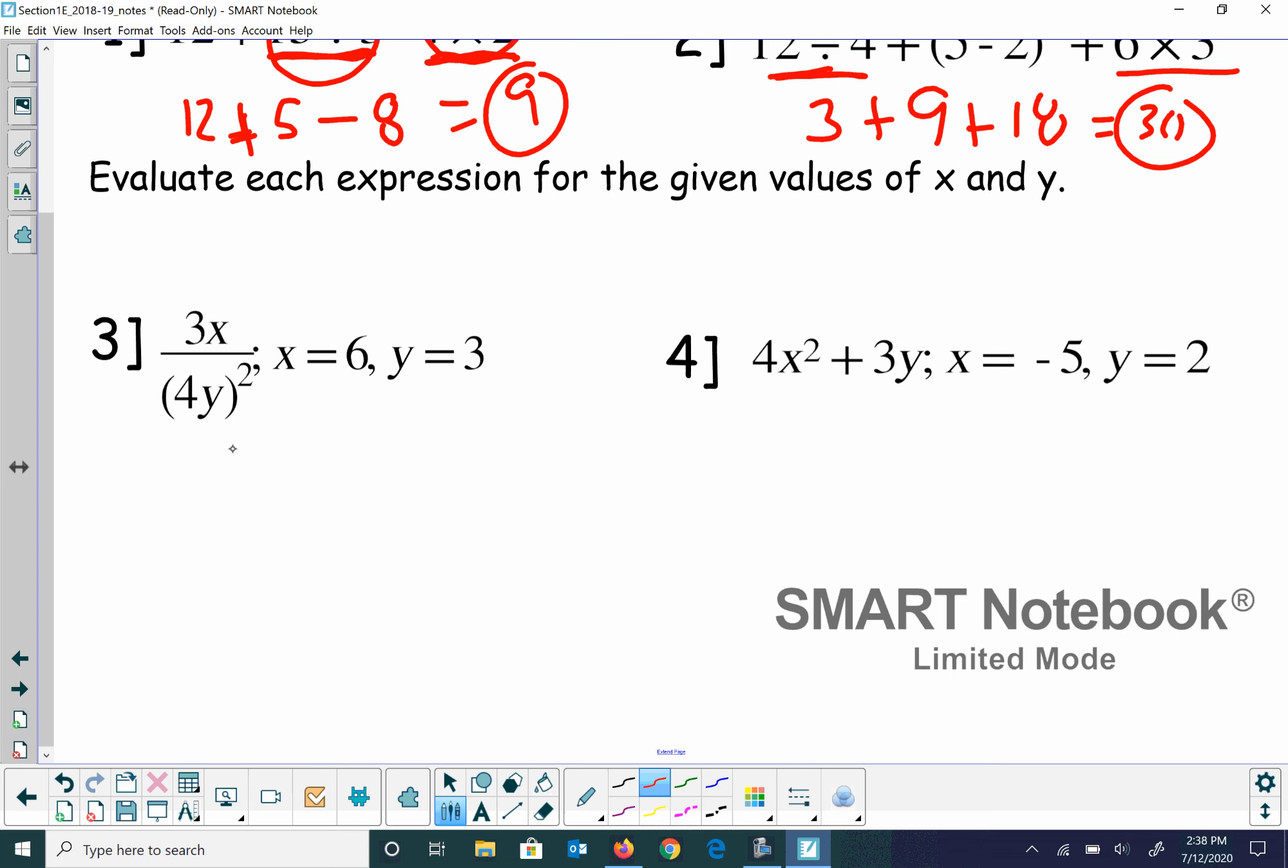So 3 plus 9 is 12. 12 plus 18 is 30. Might be kind of easy. Some stuff you might have forgotten. This one, we're just going to sub in a few things. So I have 3 times 6 on top. And then on bottom, I have 4 and then y, which is times 3. And I'm going to square that. So on top, we're going to take care of that. 3 times 6 is 18. 4 times 3 is 12. 12 squared is 144. Then we can reduce this.